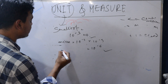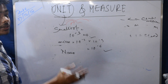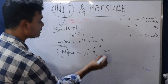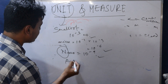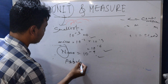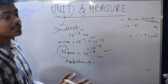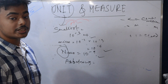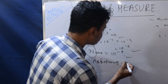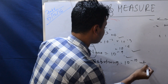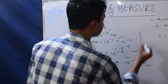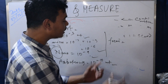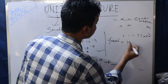Nano is 10 to the power minus 9 meters. Next is angstrom — angstrom is used to measure wavelength of light, equal to 10 to the power minus 10 meters. The smallest possible length is fermi — 10 to the power minus 15 meters.